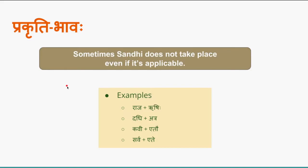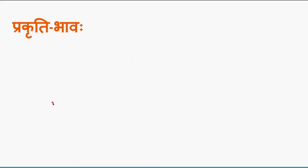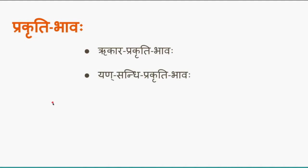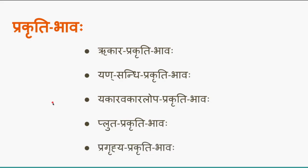In all these four examples, though there is a possibility of sandhi, it does not take place, and this is what we call prakriti bhava. Now let us see in which conditions prakriti bhava can happen. There are five scenarios: akara prakriti bhava, en sandhi prakriti bhava, yakara-vakara lopa prakriti bhava, pluta prakriti bhava, and pragrahya prakriti bhava. Let's study each one, starting with rikara prakriti bhava.